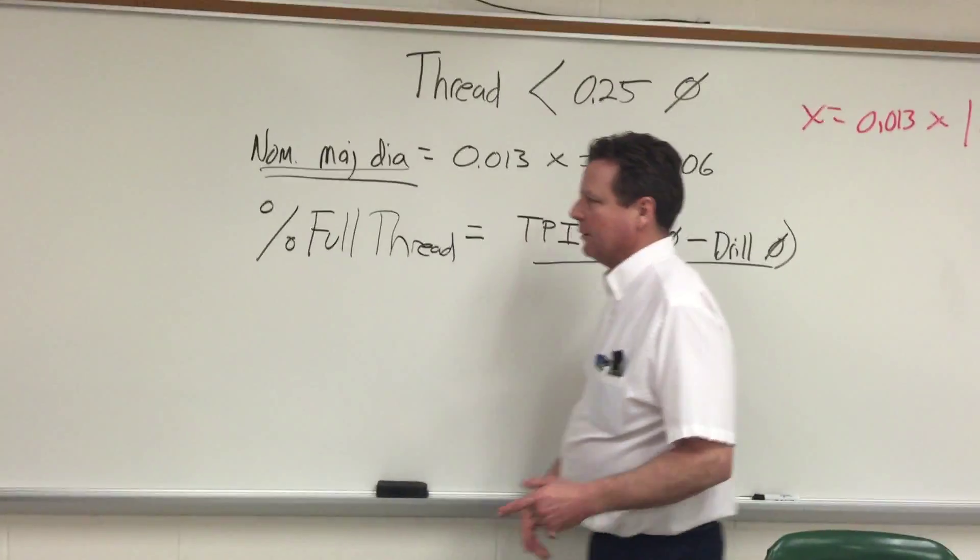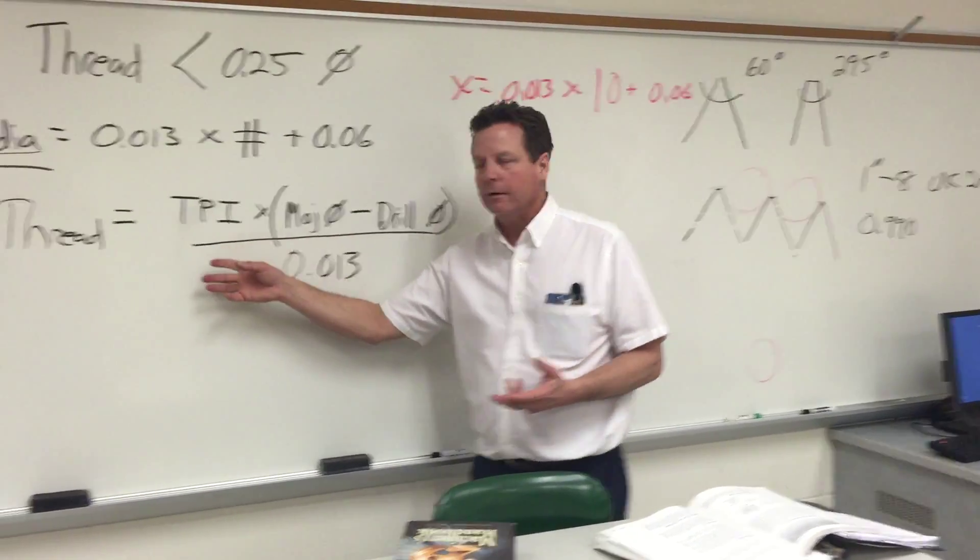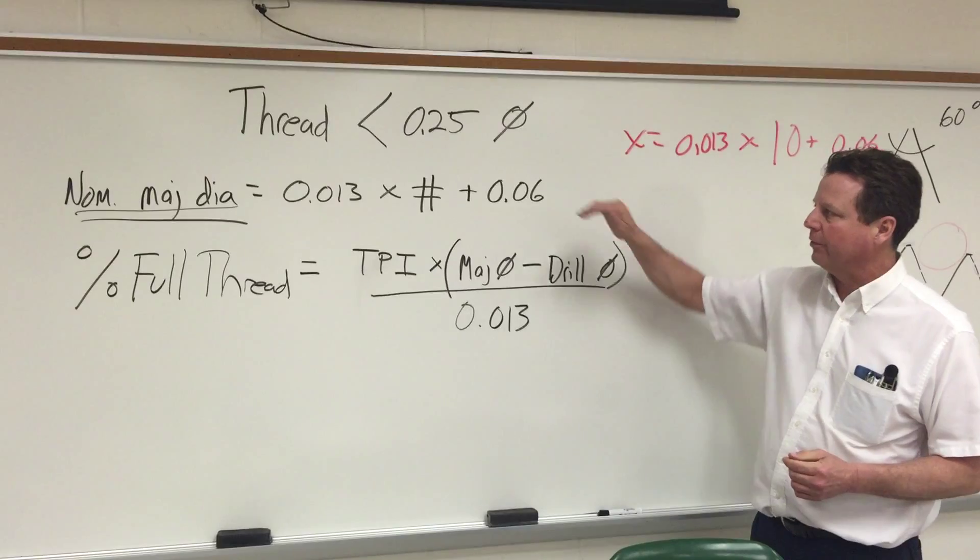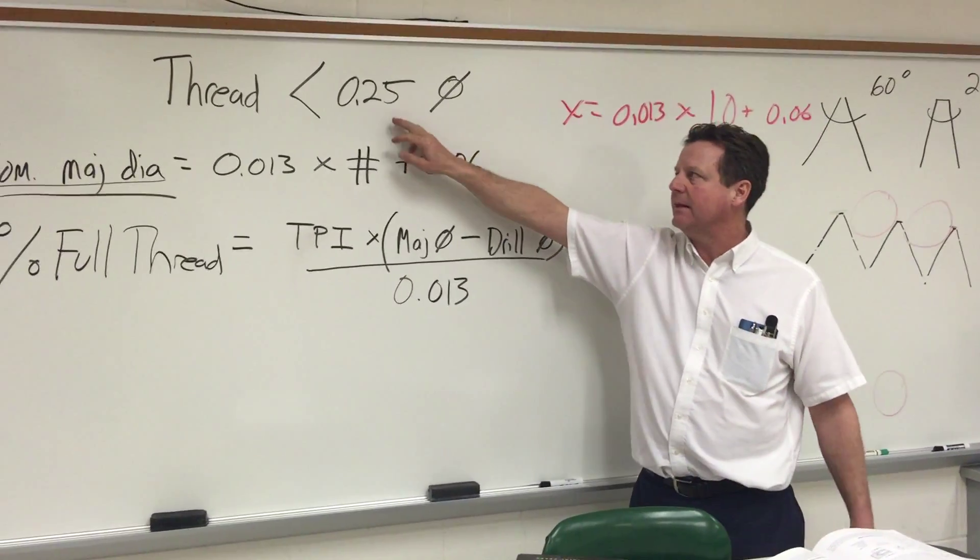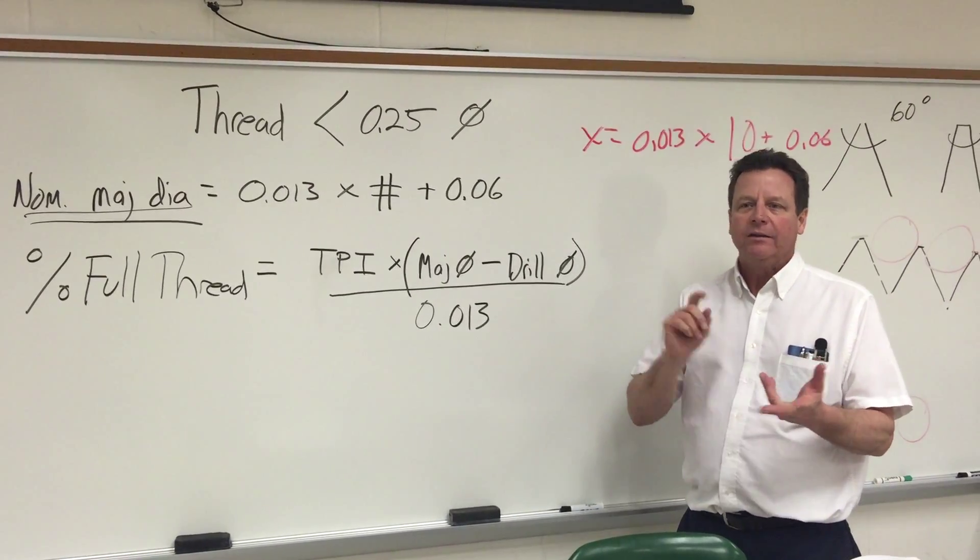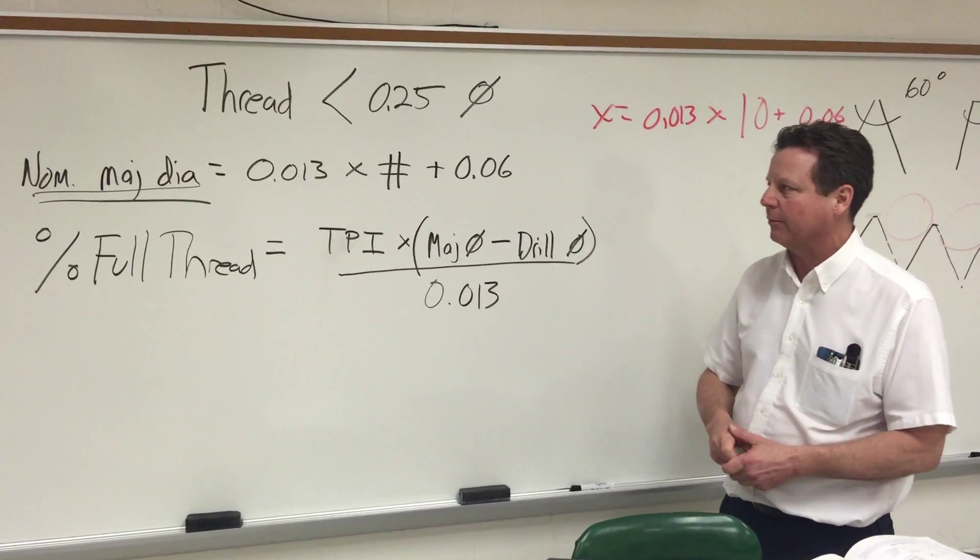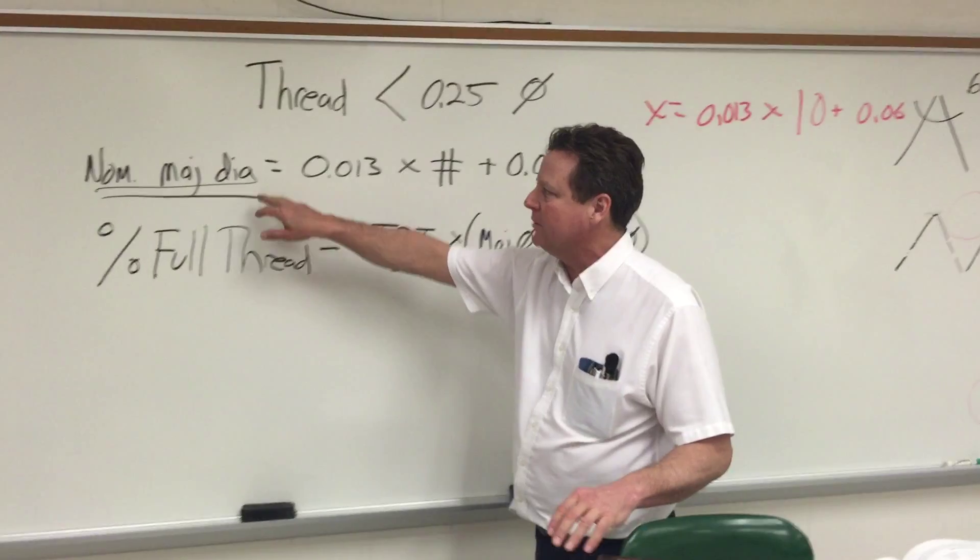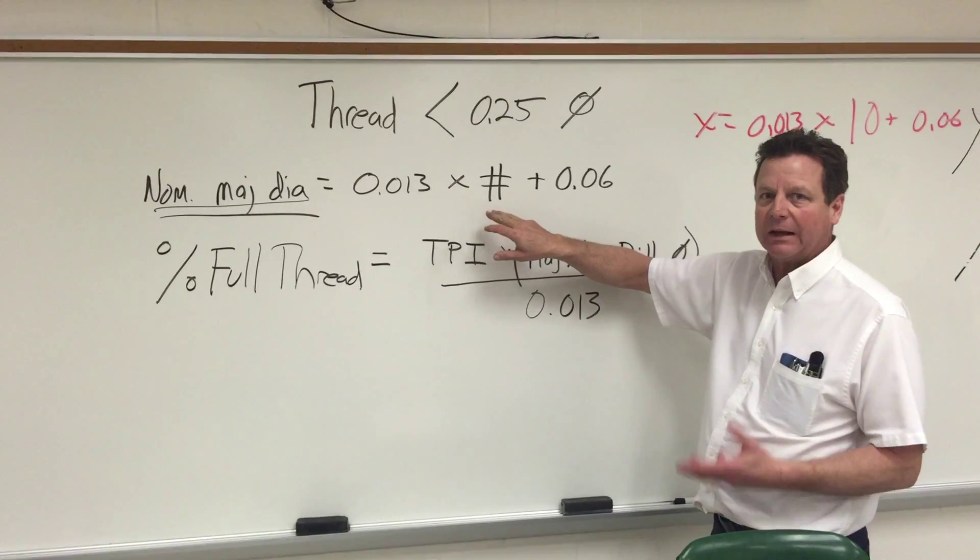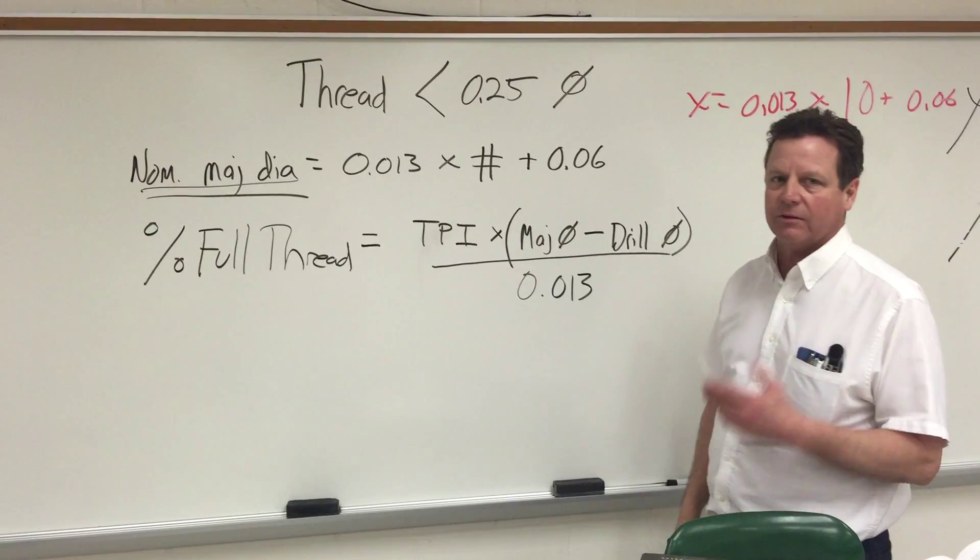Those are the classifications we went over: UNC, UNF, and UNEF. Here are two very handy formulas to be used on threads of diameters less than a quarter inch—the 12-24, 12-28, 10-32, 8-32, 4-40, those kinds of threads. How do you know what the major diameter is supposed to be? It's 0.013 times that number—like 8-32, the 8 would go here—and then you add 0.06 to it.